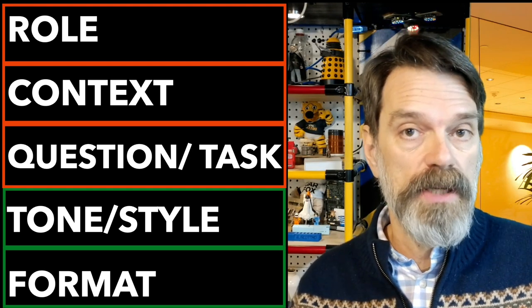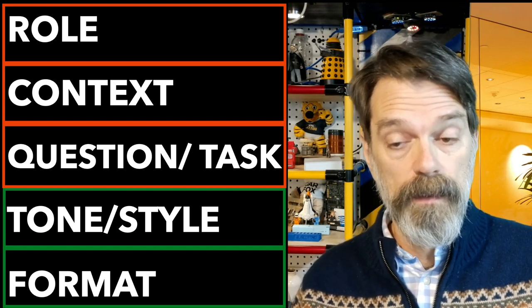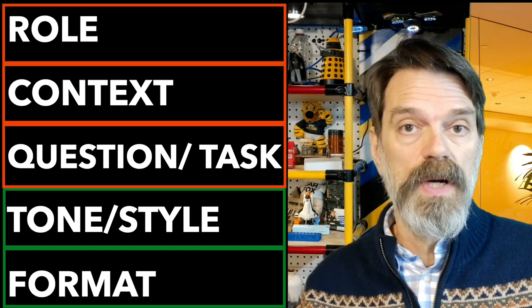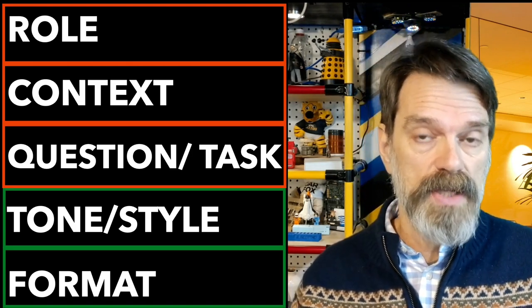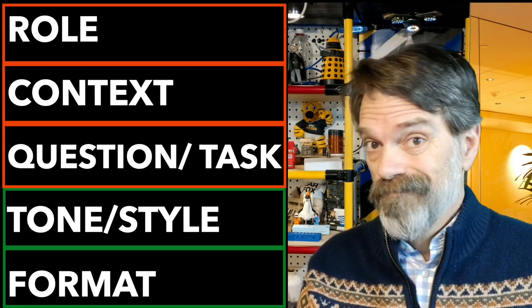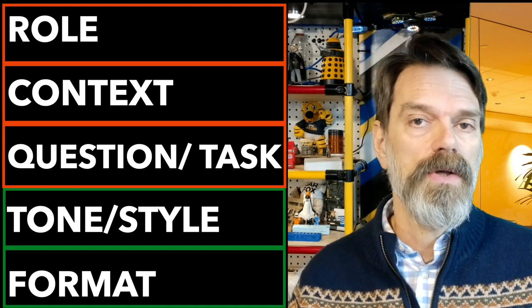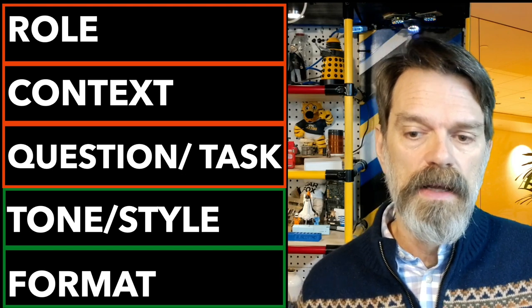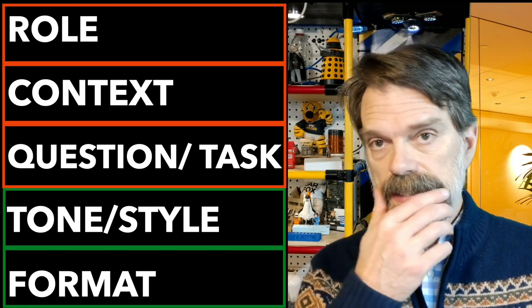To get better outputs, we want a better prompt. There's a formula I like: it has a Role — the role that ChatGPT is going to play; Context — in what context are we producing this output and what is it going to be used for; then the Task — what is the question we are asking. Optionally, you can add Tone — do you want it conversational, academic, or like an email? You can even upload examples of your own writing. And Format — do you want a bulleted list, a step-by-step guide, a CSV file you can import into Excel?